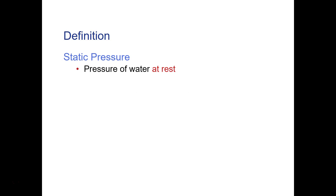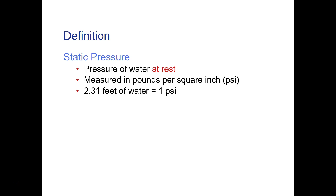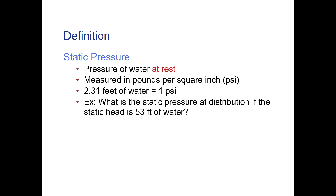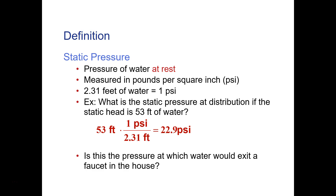Static pressure is the water pressure at rest, measured in PSI. Going back to the earlier relationship: for every 2.31 feet of water, that equals 1 PSI. So for that same 53 feet of static head, the static pressure equals 53 times (1 PSI / 2.31 feet), which gives 22.9 PSI. Is that enough water pressure for a house? No — that's not nearly enough.